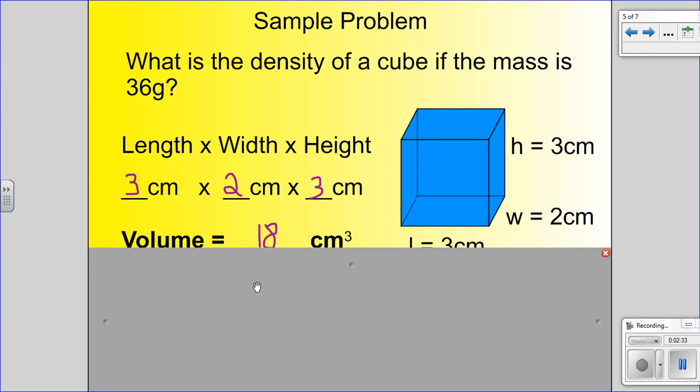However, we have the cube in front of us. Let's pretend I have a ruler and I already measured these. The length I measured is 3 centimeters. The width right here I measured is 2 centimeters, and the height is also 3 centimeters. We will just fill in these fields right here. Length, 3 centimeters. Width, 2 centimeters. And height, 3 centimeters.